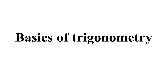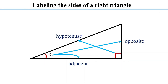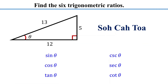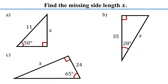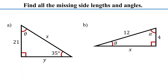In this lesson, we will focus on the basics of trigonometry. We will start with a review of a right triangle and learn how to label its sides. We will discuss the six trigonometric functions and learn how to find trigonometric ratios using SOHCAHTOA. Finally, we will apply these concepts to find missing side lengths and angles in right triangles.